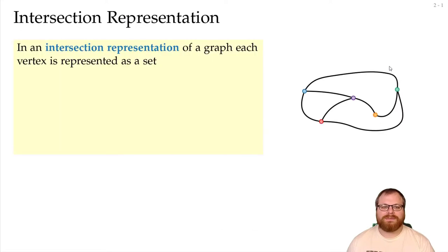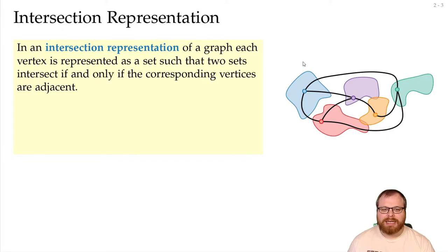I first want to define what an intersection representation is. If we have a graph and we represent every vertex as a set of points in the plane, then we can have it such that two sets intersect if and only if the corresponding vertices are adjacent. So here we have an underlying graph, for every vertex we have a set, and we can see for example the purple and the orange set intersect and there is an edge between them.